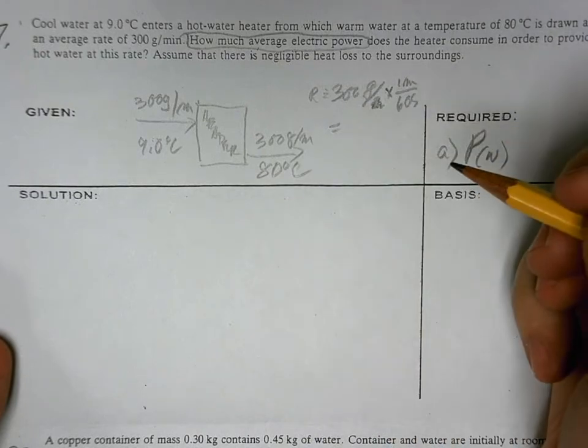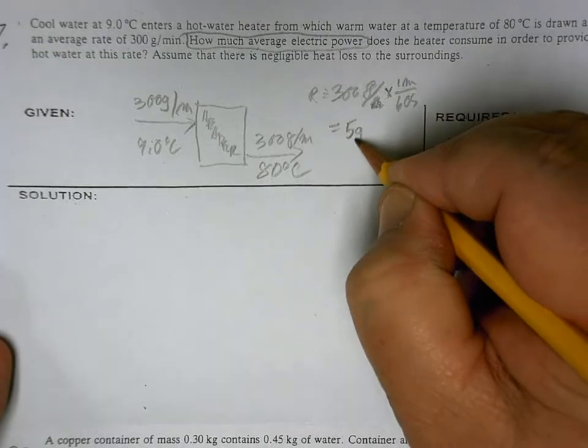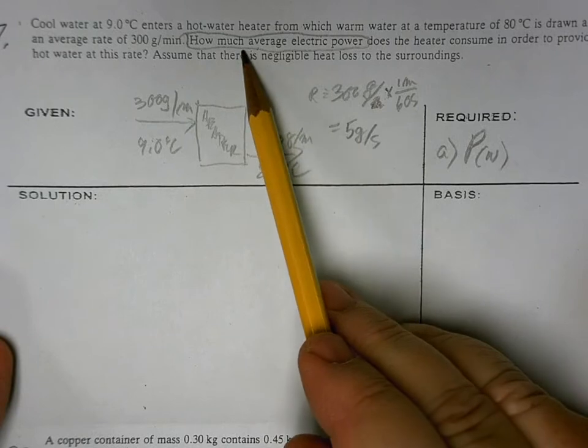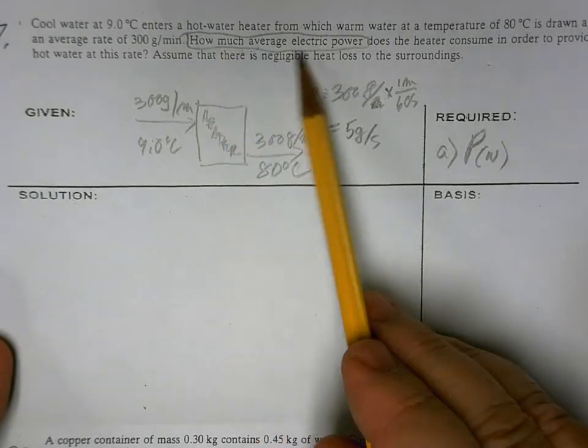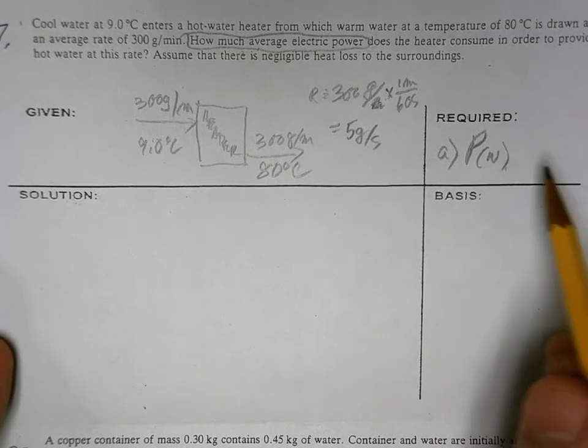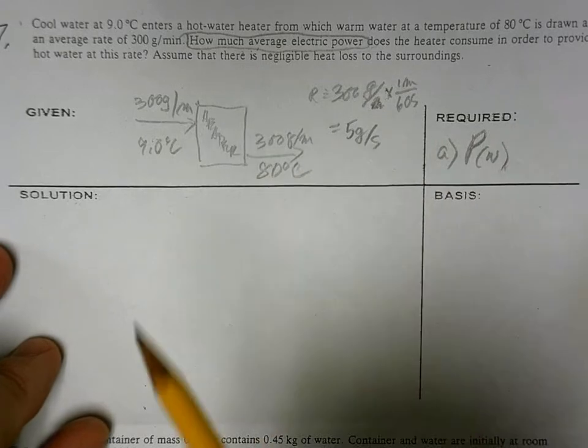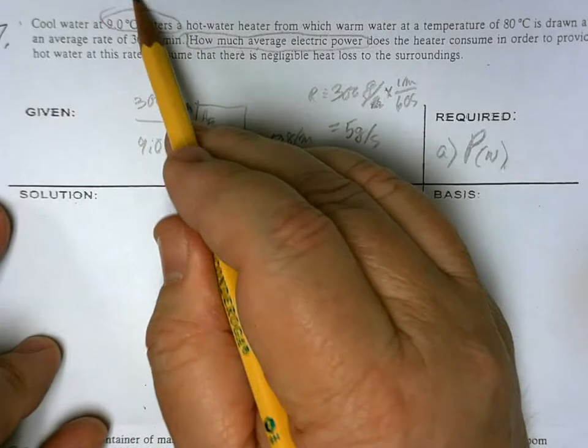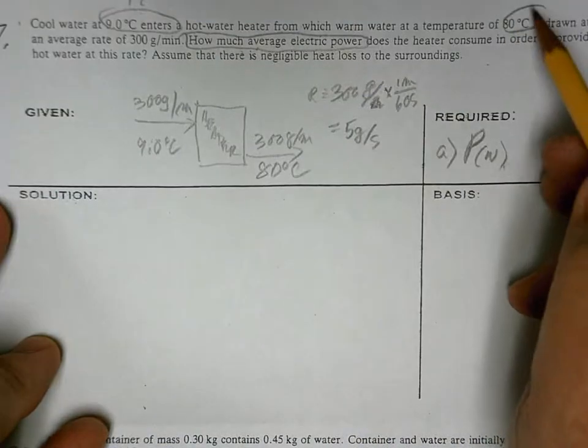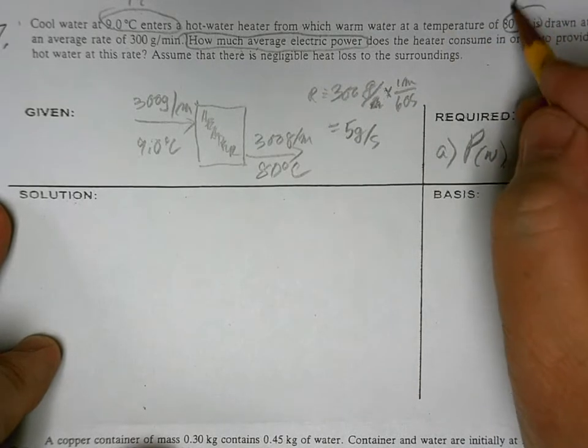And your rate will come down to five grams per second. And what you're looking for is the average power, so power is in watts. You don't have to use kilowatts, you can use kilowatts, it's okay.